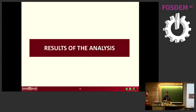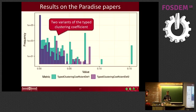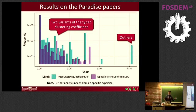We calculated multiple type clustering coefficient metrics — TCC1 and TCC2 — on the Paradise Papers, looking for different wedge and triangle types. Results show clear outliers: some nodes in the offshore leaks dataset are highly clustered for certain types, which is worth investigating. We don't have domain-specific expertise, so we invite anyone who does to reach out.